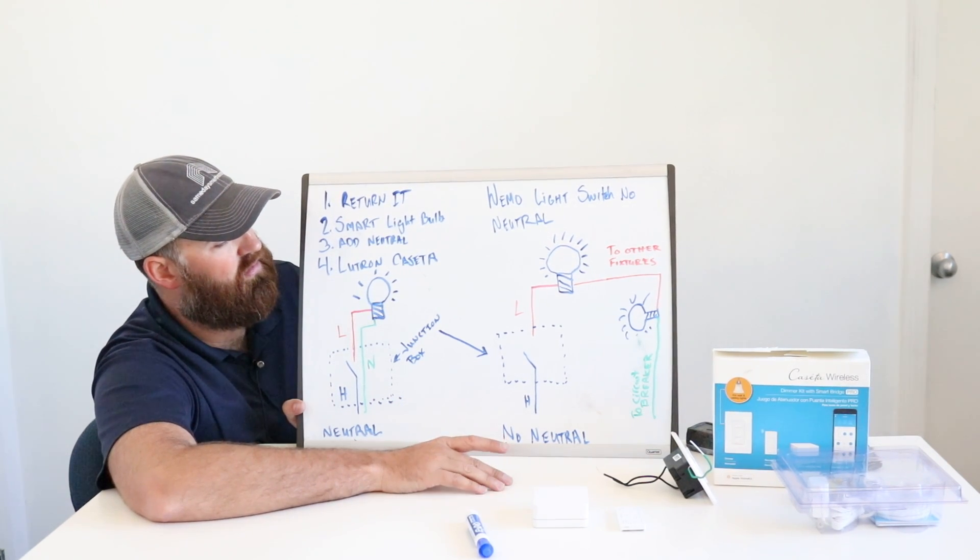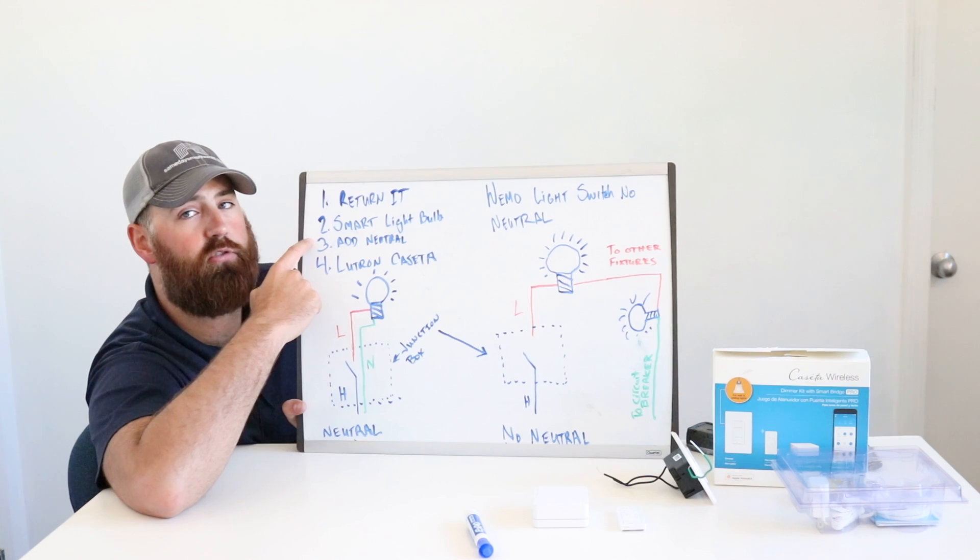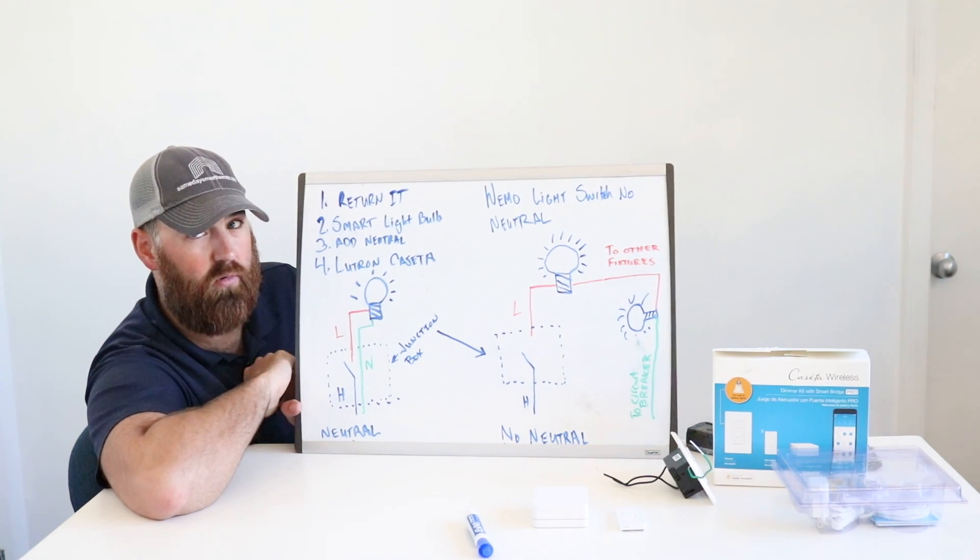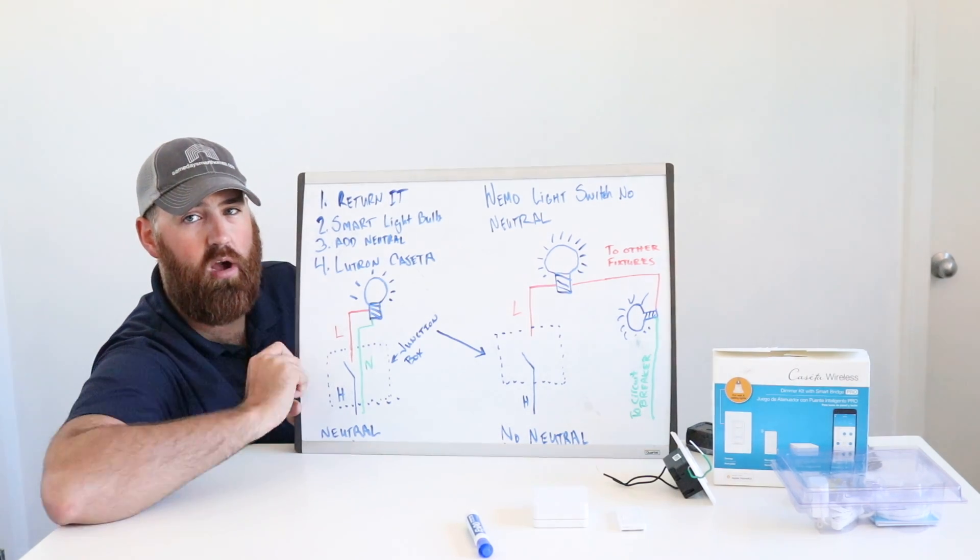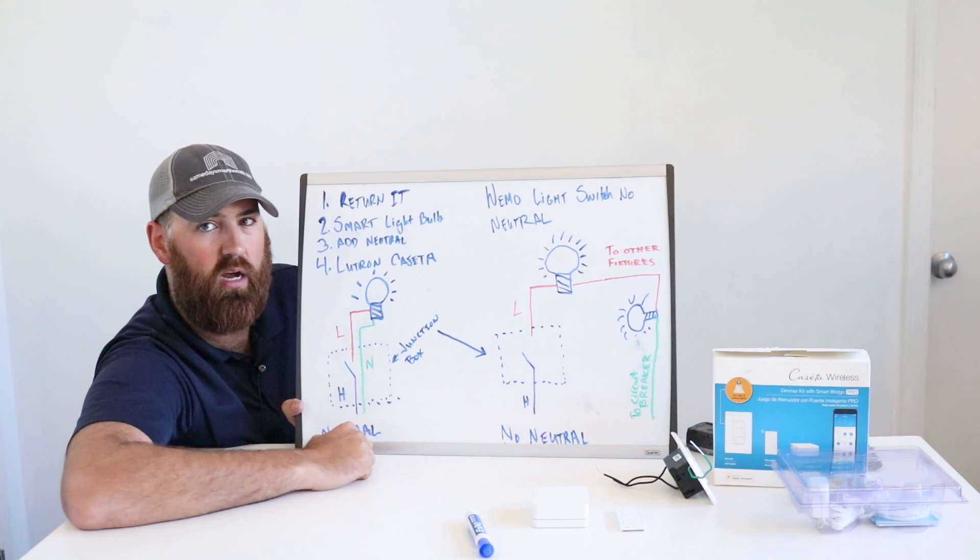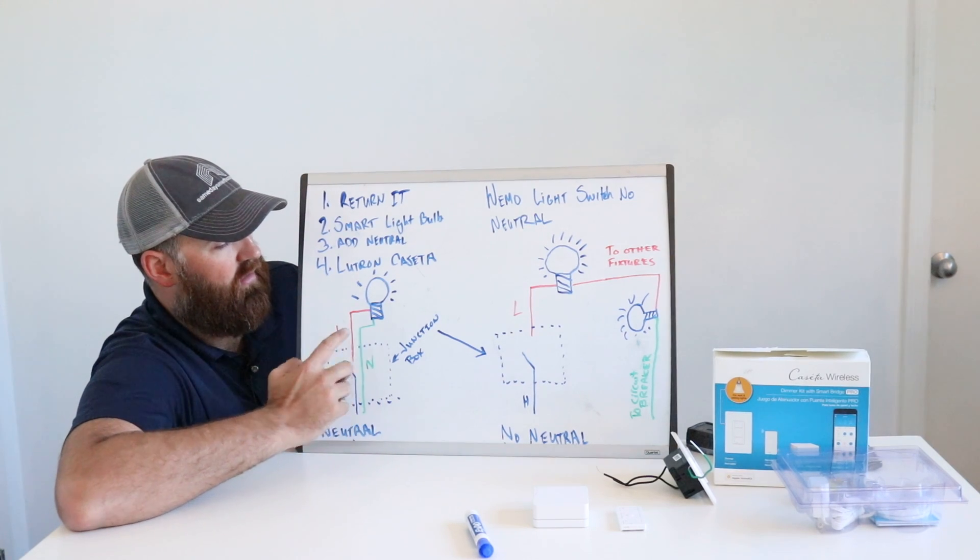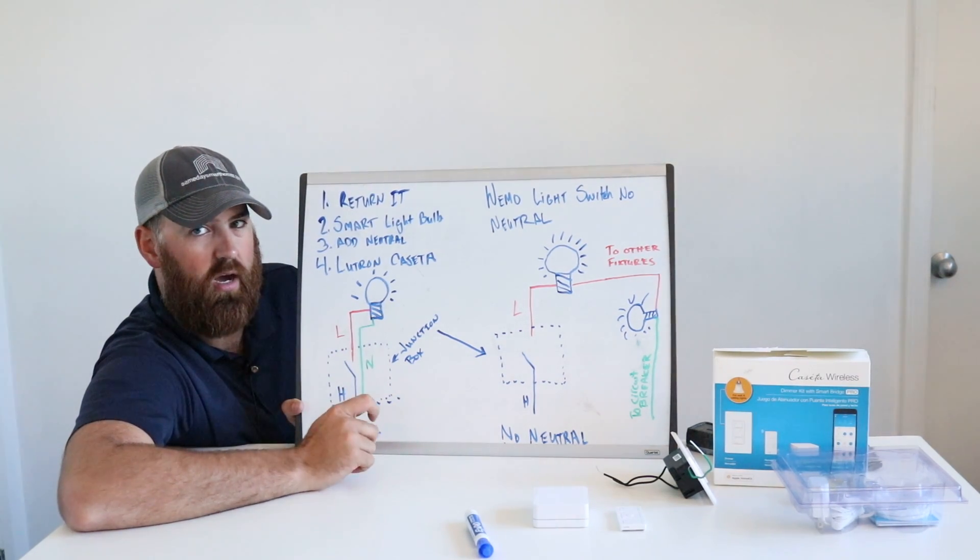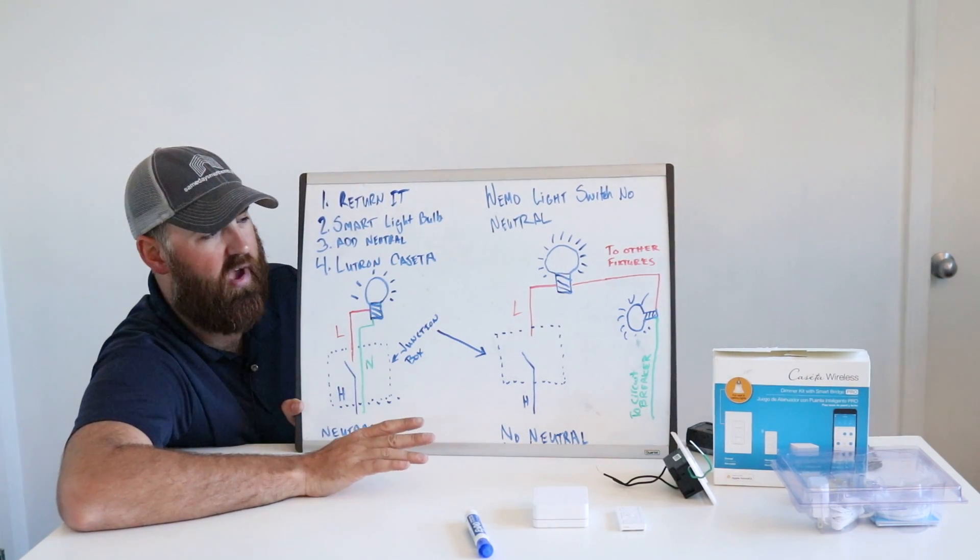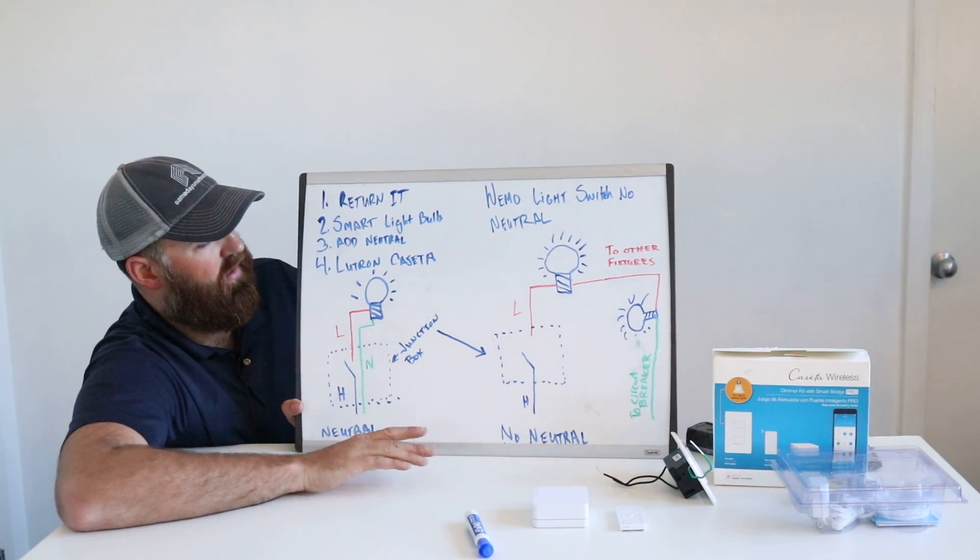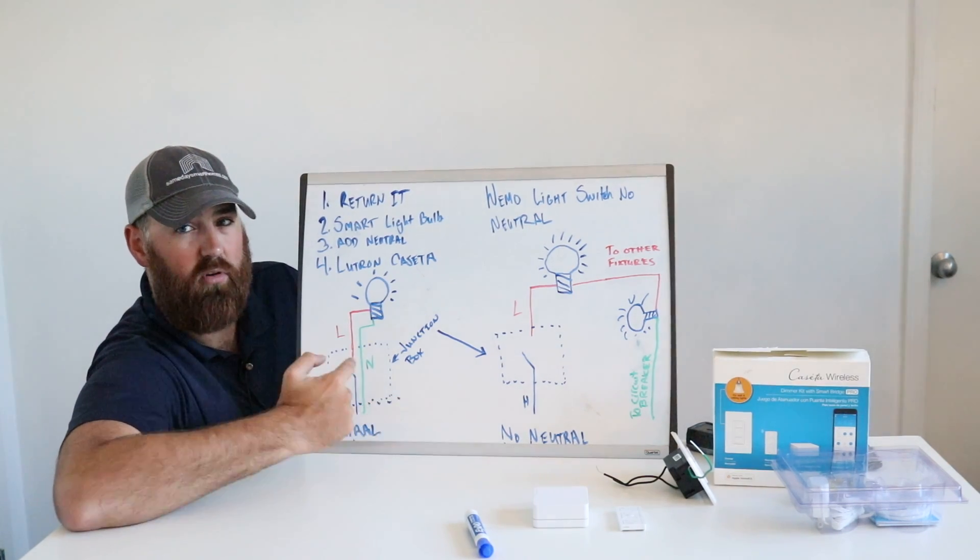So if that is the case, you would have to do a lot of work to add a neutral wire, which is an option if you really want to use these Wemo switches. But what that would require is you running a new neutral wire, most likely opening up your walls and pulling it to the switch box, and then pulling it back to whatever circuit breaker you needed. And you're probably going to open up walls or you're going to have to fish electrical wire through conduit. It's just a messy process. And unless you're doing a renovation, I would not recommend that. You don't want to do that. So you don't want to add a neutral wire unless you absolutely have to, you're doing a major renovation, or if you're building a new home, you already have to do this anyways.